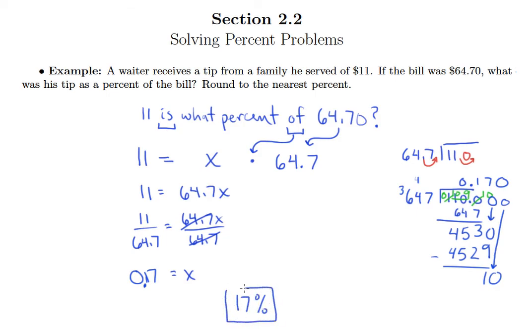So this waiter got a tip that's between 15 and 20%. So he can assume that they were happy with his service.